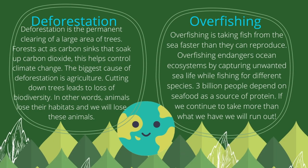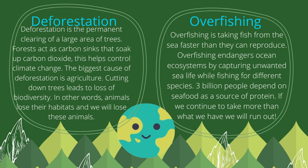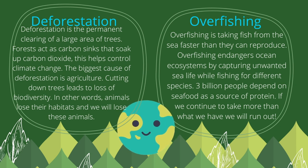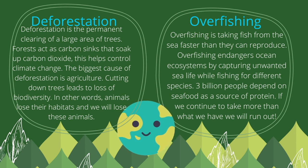Deforestation is a permanent clearing of a large area of trees. Forests act as carbon sinks that soak up carbon dioxide, which helps control climate change. The biggest cause of deforestation is agriculture. Cutting down trees leads to loss of biodiversity — in other words, animals will lose their habitats and we will lose these animals.